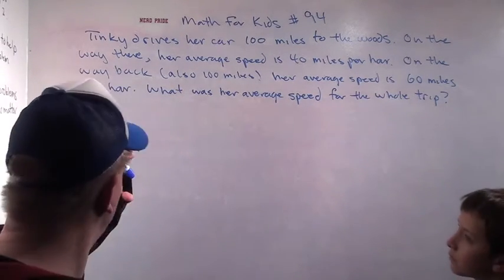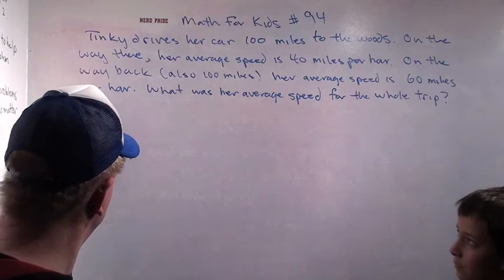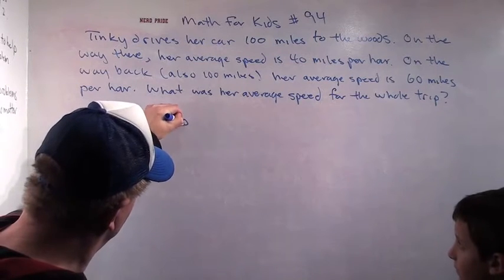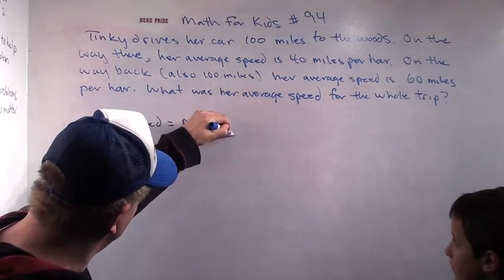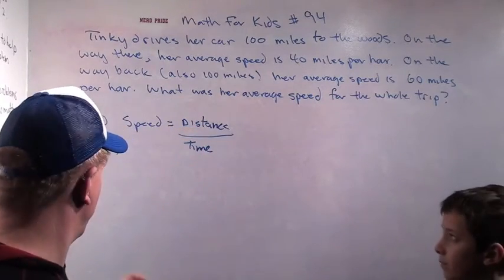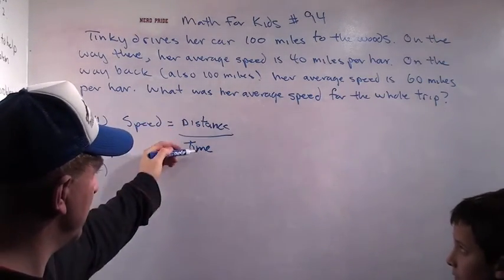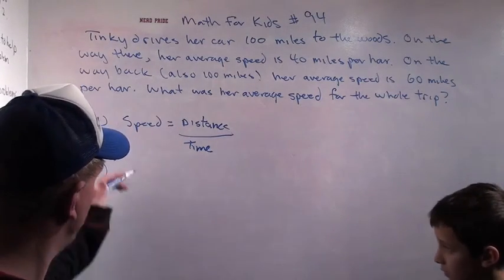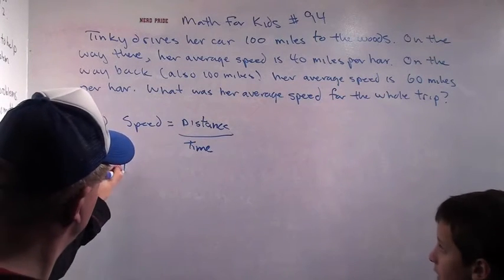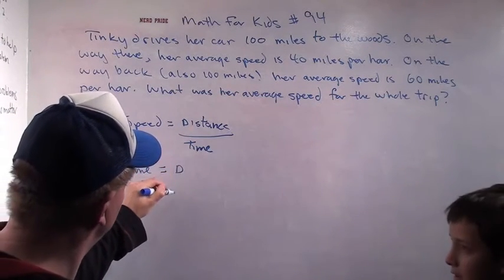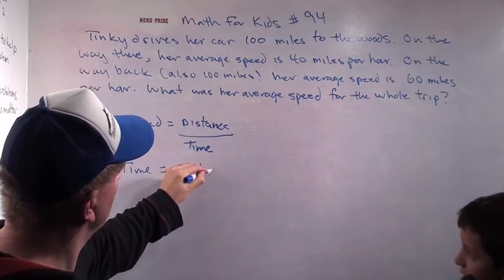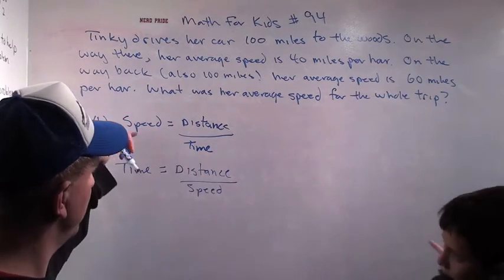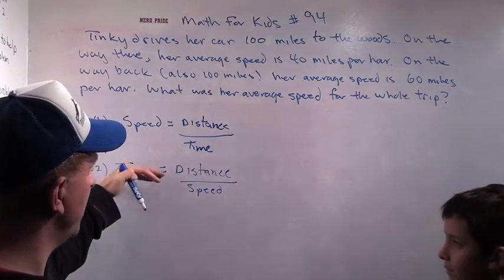We have to go back all the way to the beginning principles. What is our equation about speed? Speed equals distance over time — distance divided by time. And this equation can be morphed into two other equations about distance and time. Speed equals distance divided by time. What's another form of this equation that's exactly the same? Time equals distance divided by speed.